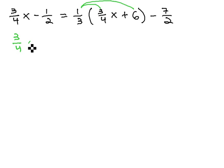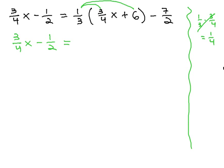We now have 3 fourths x minus 1 half equals, when we multiply, doing a little chicken scratch on the side, 1 third times 3 fourths, the threes divide out and we're just left with 1 fourth, 1 fourth x.